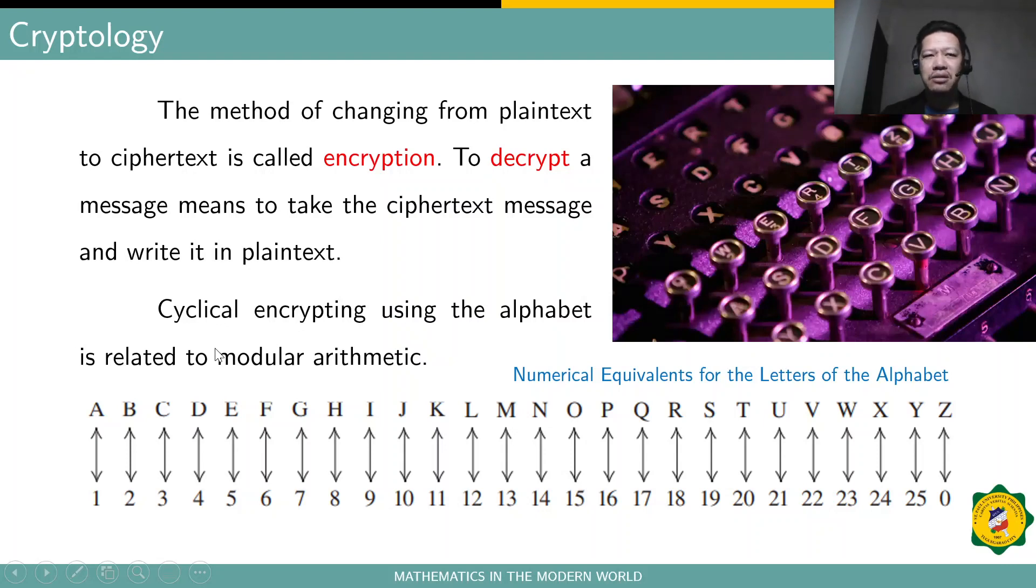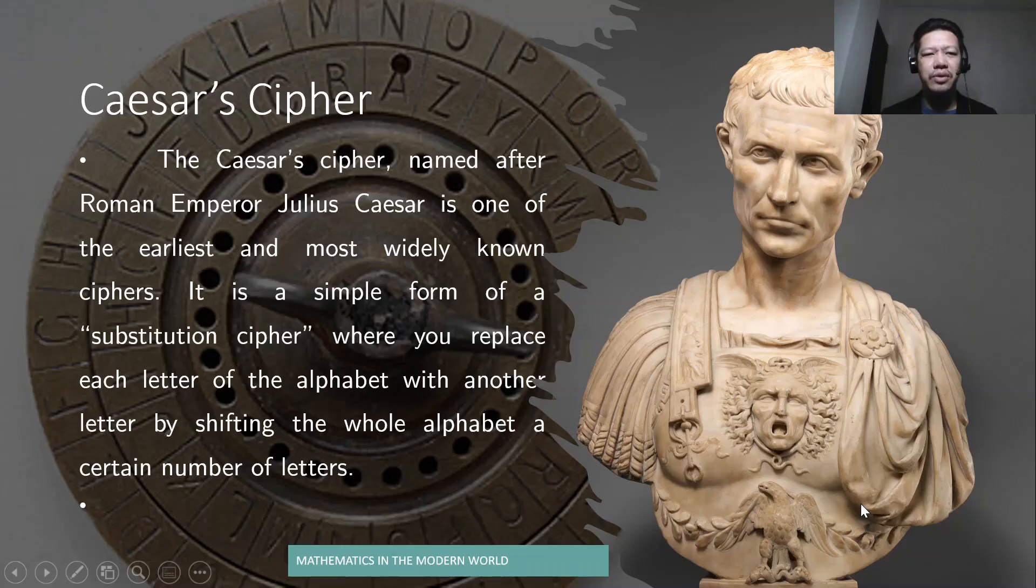However, one kind of method of enciphering is cyclical encrypting using the alphabet, which is actually related to our previous videos or topic like modular arithmetic. Let's say, for example, here, the numerical equivalence for the letters of the alphabet from A to Z, that's actually 1 to 26. But we use here modular 26. That's why Z corresponds to 0 because it's the 26th letter. And if you get the modular of that, that gives you 0.